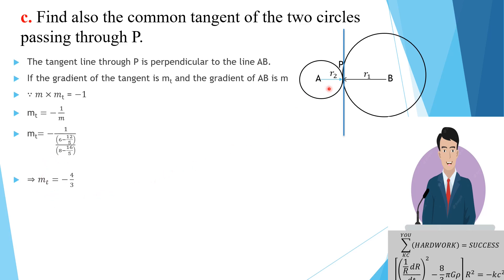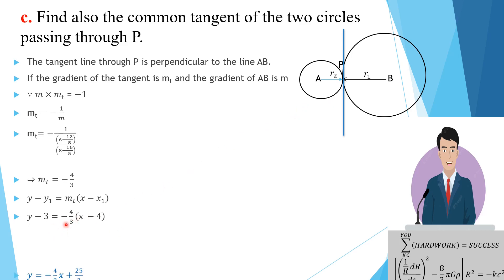Computing the gradient of AB gives m = 3/4, so the gradient of the common tangent is mt = −4/3. Using point P (4, 3) and the straight line formula y − y1 = mt(x − x1), we substitute in the values and simplify to get the equation of the common tangent to the two circles.